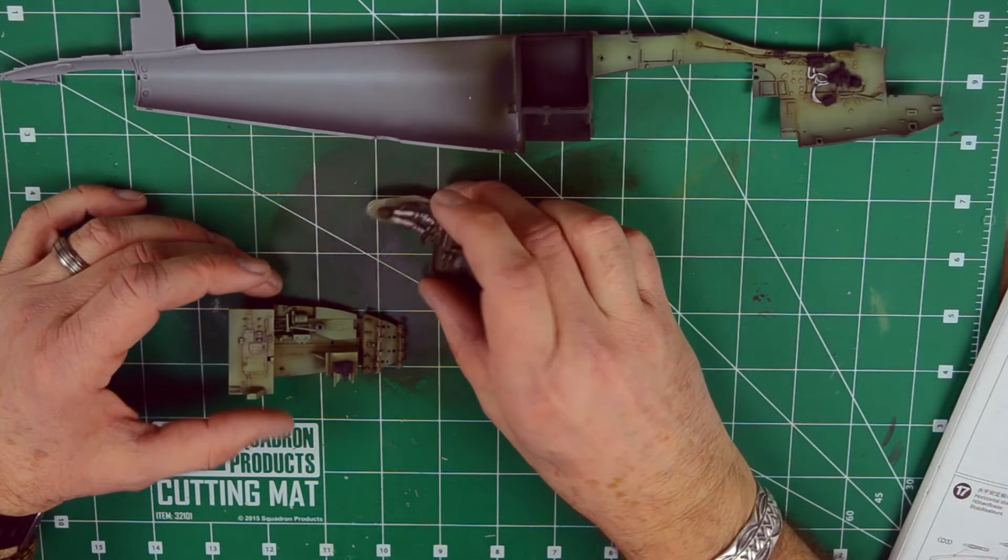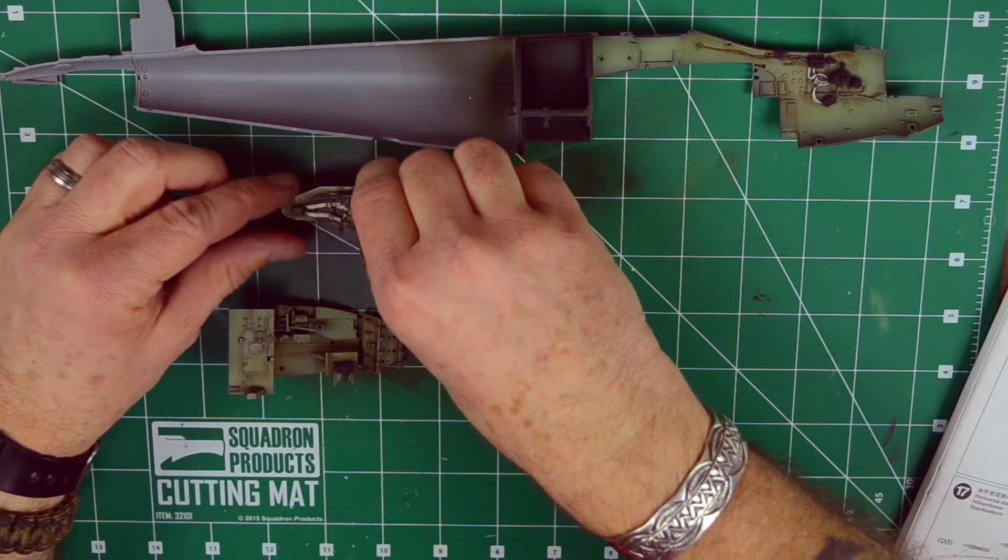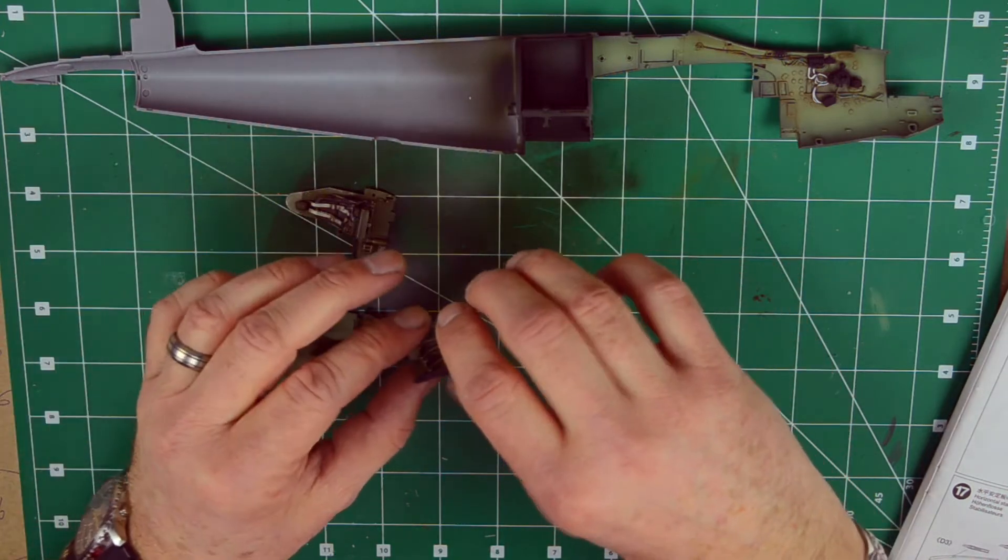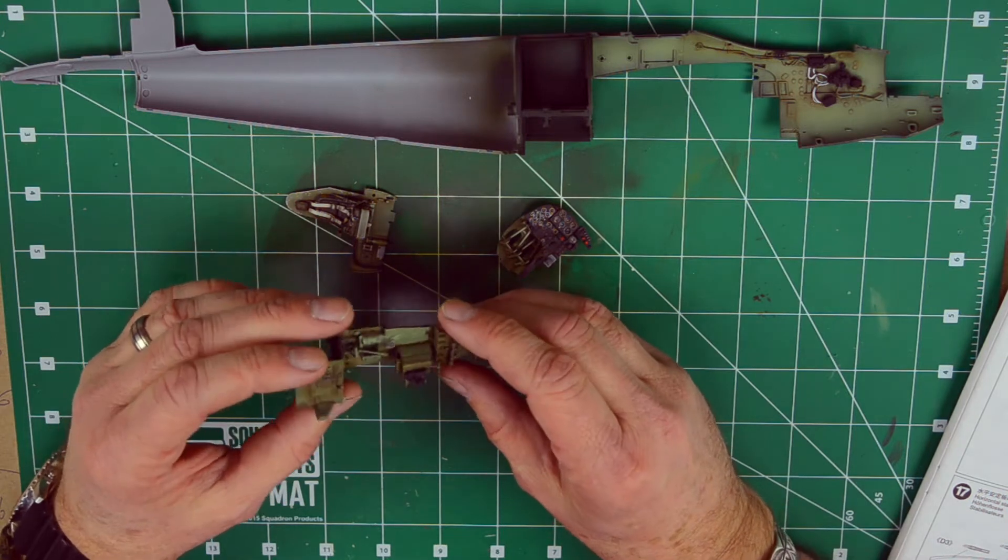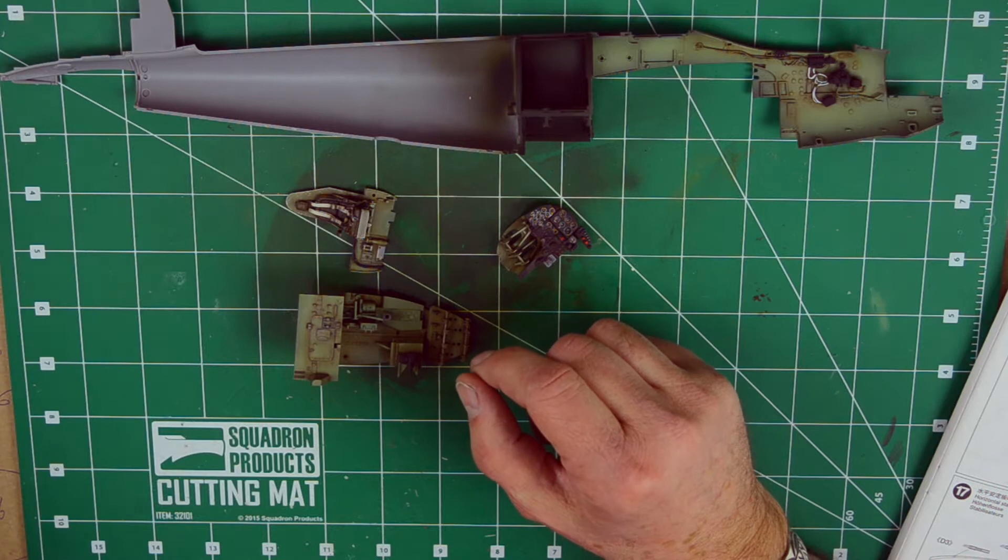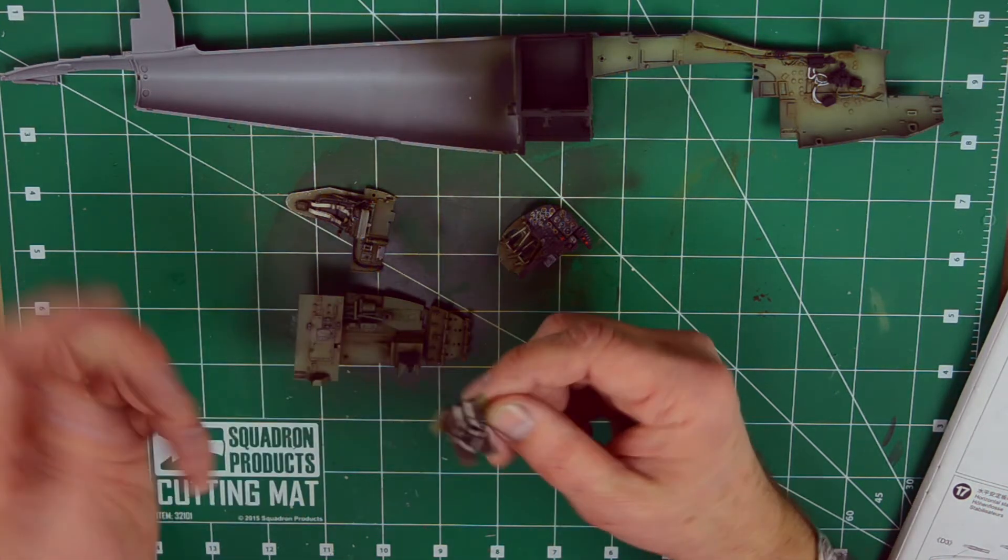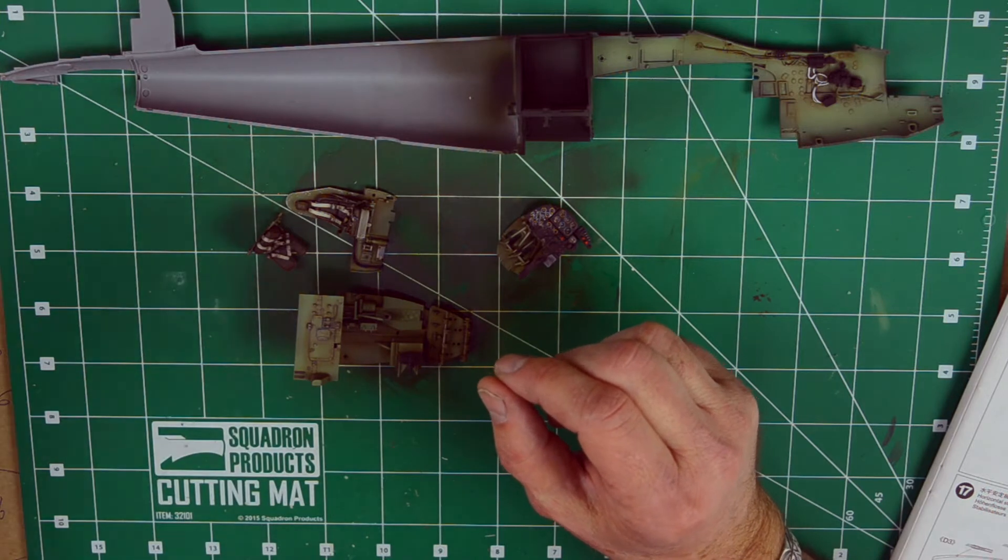So we have the main seat, the pilot seat painted up. We have the instrument panel all assembled. We have the main floor with the rudder pedal housing. We have the navigator or bombardier seat, and we have the radio.